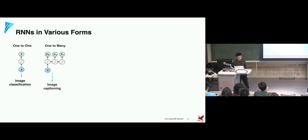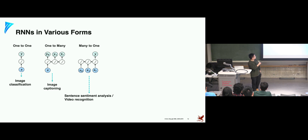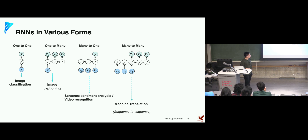For image captioning, the input is a single image and the output is a sequence of tokens, so this is a one-to-many computation. Many-to-one includes sentiment classification, where the input is a sentence (a sequence of tokens) and the output is a single label like the sentiment label. Or video recognition, where we give a sequence of video frames and predict the activity — that's also many-to-one. For machine translation, giving a sentence in a source language like English, the output is another sentence in Chinese or Japanese. We call this sequence-to-sequence modeling.